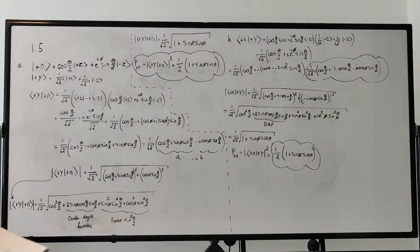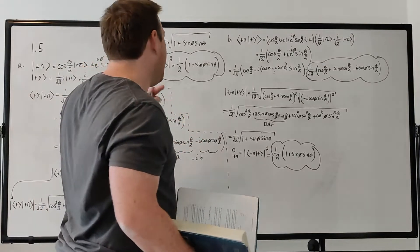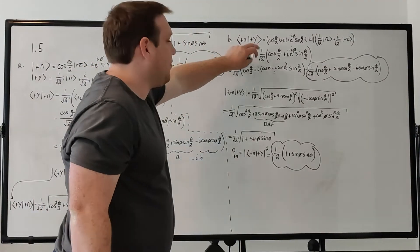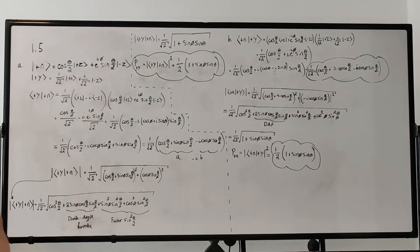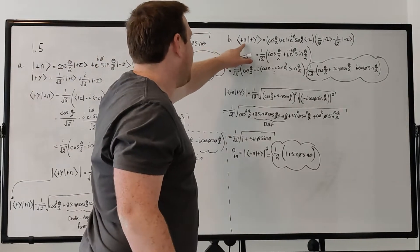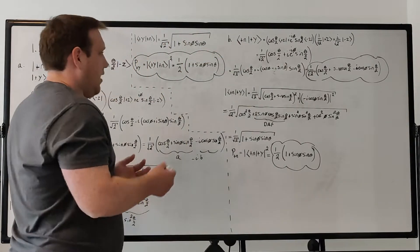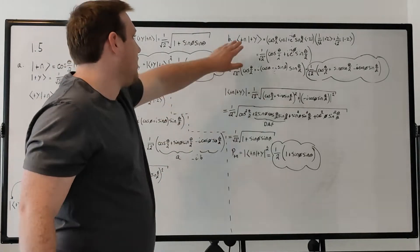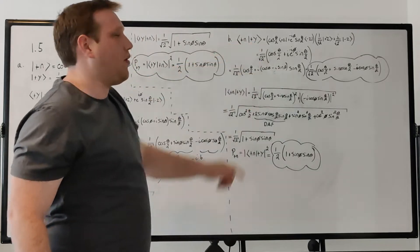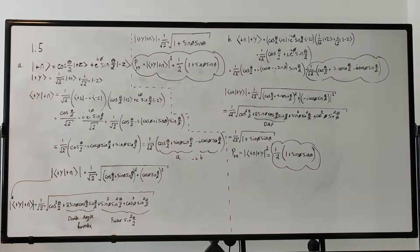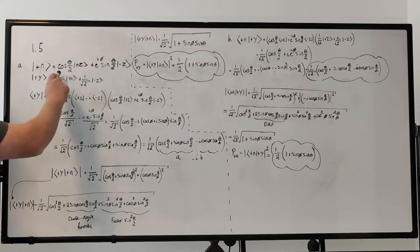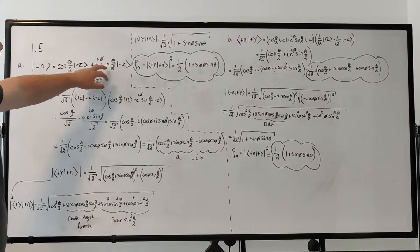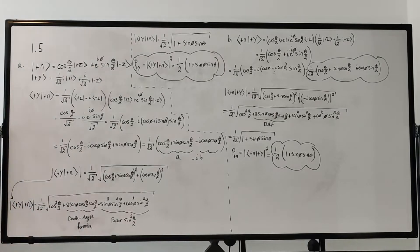Part B is basically the opposite. It says let's say our state is in |+y⟩ — what is the amplitude that we find the particle in the state |+n⟩, and then find the probability from that amplitude? So again, we have our state |+n⟩ defined as cosine(θ/2)|+z⟩ plus e^(iφ) sine(θ/2)|−z⟩, where |+z⟩ and |−z⟩ are our basis states.